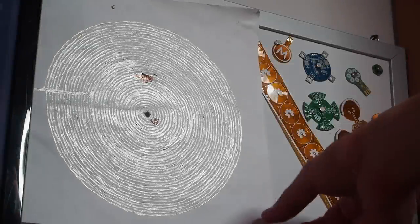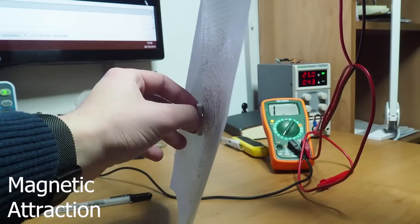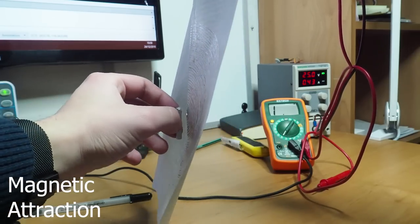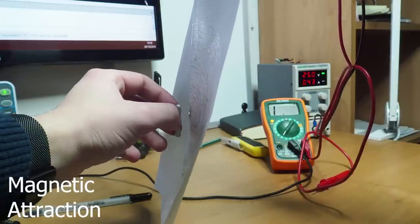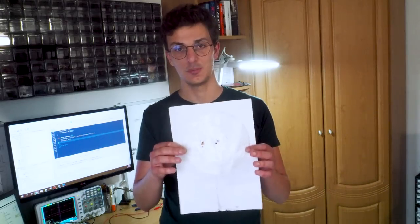One of the coolest experiments I ever did on this YouTube channel is this paper electromagnet. This was done by drawing a spiral coil on a piece of paper by using conductive ink. Now the company that made the conductive pen that I used, CircuitScribe, has reached out to me and told me they would like to send me something to help me evolve this idea a little bit better.